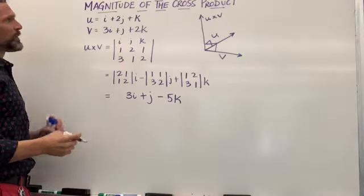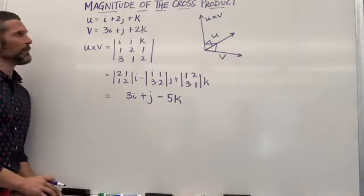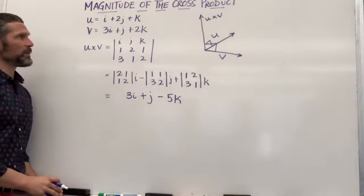If I give you that vector u is 1i plus 2j plus 1k and vector v is 3i plus 1j plus 2k,